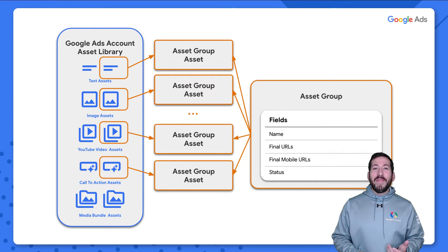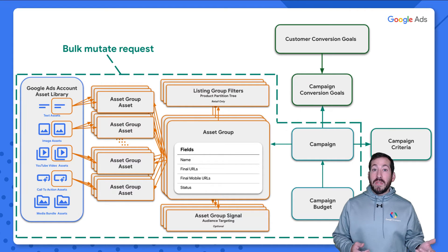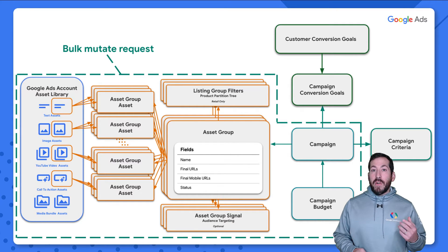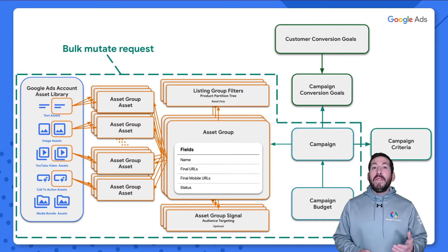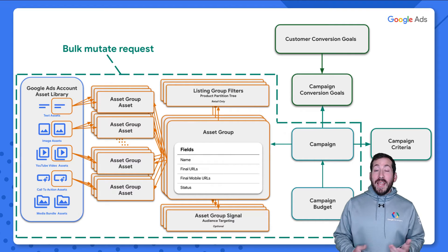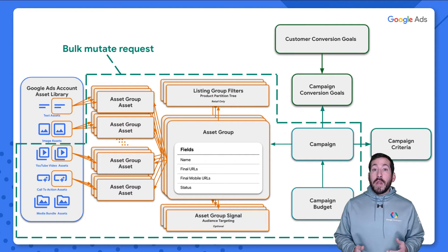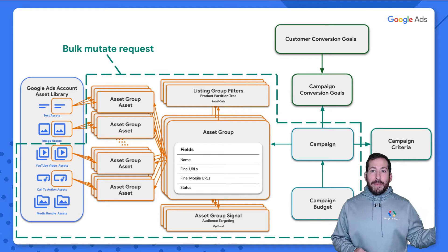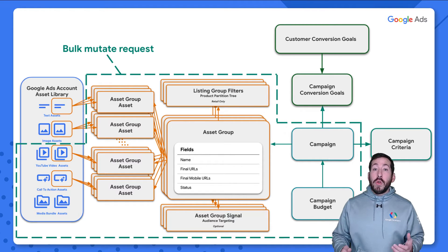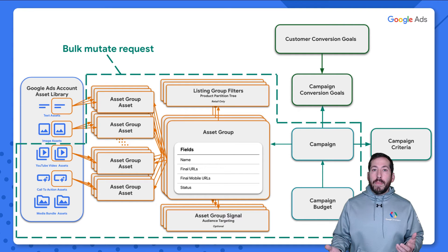It is also possible to include asset creation operations in that bulk mutate request. When you take this approach, the assets will be given a temporary resource name containing a temporary ID — and just as with asset groups, make sure the operations that create the assets come before the operations that create the asset group assets that reference them. Finally, you can use a combination of both: create some assets in a separate independent request prior, and create some at the time of asset group creation. There's no right or wrong approach — it depends on what you're trying to accomplish and your infrastructure.